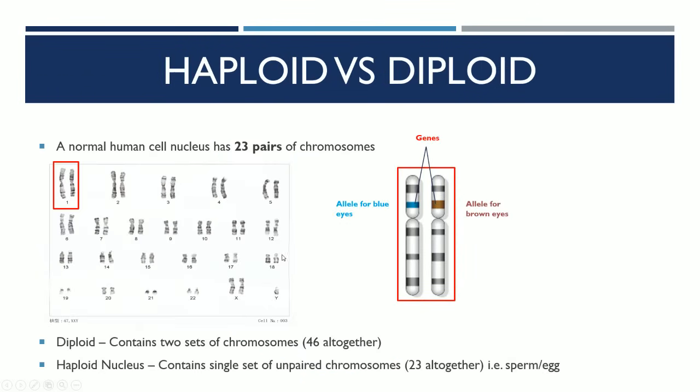Once we move on, we'll take a look at the fact that a normal human cell has 23 pairs of chromosomes. A diploid cell contains two sets of chromosomes, and that's the majority of our cells. A haploid cell will contain a single set of unpaired chromosomes, so 23 altogether.